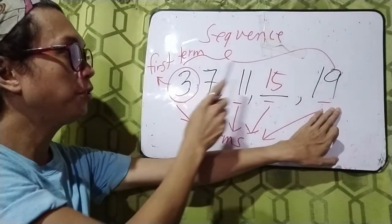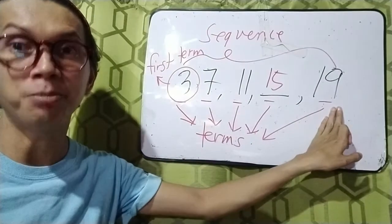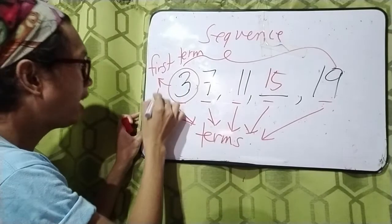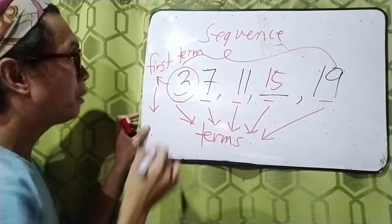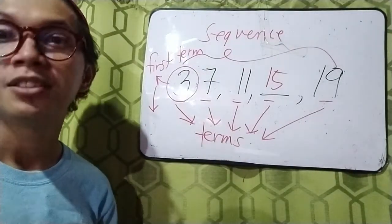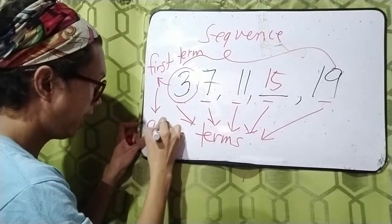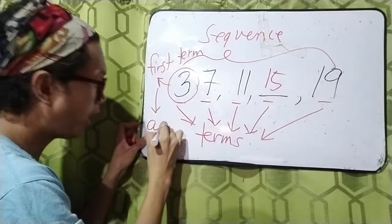1, 2, 3, 4, 5. So, it is the fifth term indeed. And for us to easily remember the term, we use variable. A sub 1, which means the first term.